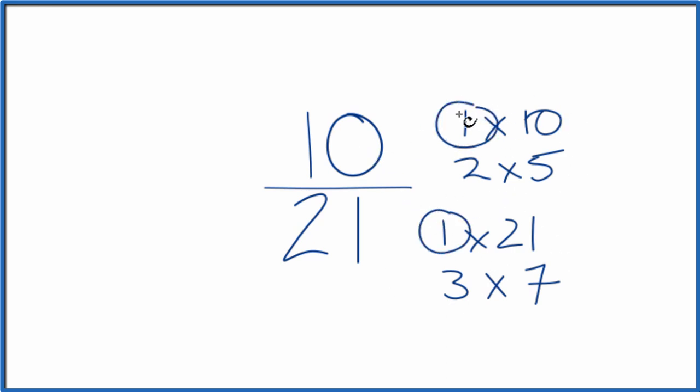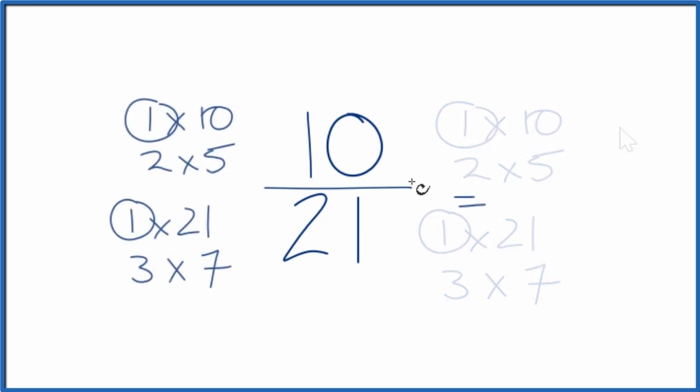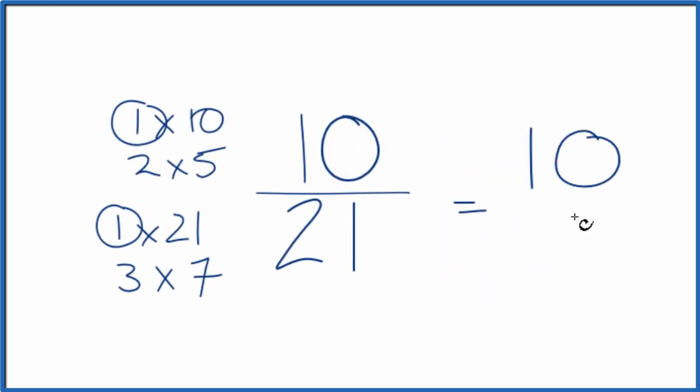So we're going to divide 10 by 1 and then 21 by 1, and we'll have simplified 10 over 21. Let's move these over here. So 10 divided by 1, that's 10, and then 21 divided by 1 is 21, and we're right back where we started here.